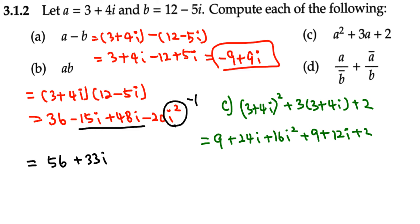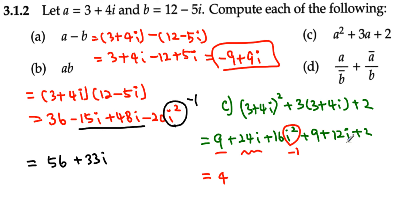Since i² equals negative 1, then 9 minus 16 becomes negative 7, plus 9 becomes positive 2, plus 2 is positive 4. For the imaginary parts, 24i plus 12i gives plus 36i. So the final answer for part c is 4 plus 36i.